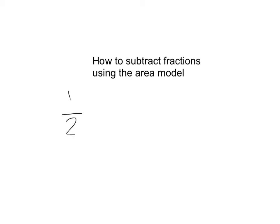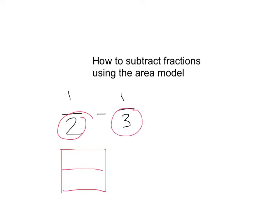Let's show you how to draw this out one more time. The denominator of my first fraction becomes my number of floors, so my building will have two floors. The denominator of my second fraction becomes the number of rooms, so each floor has three rooms. The difference between adding and subtracting is that in this one you will have to draw two identical diagrams, and then you go ahead and subtract from that fraction.